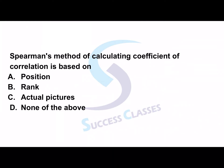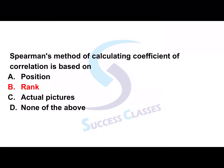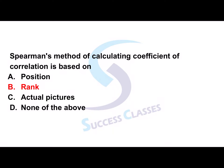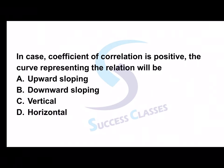The first question: Spearman's method of calculating coefficient of correlation is based on — position, rank, actual figures, or none of the above? There are easy questions and some knowledgeable questions — it is a blend of both. Very easy — Spearman's rank correlation coefficient. So Spearman's method of calculating coefficient of correlation is based on ranks.